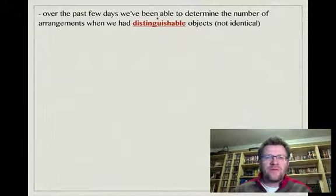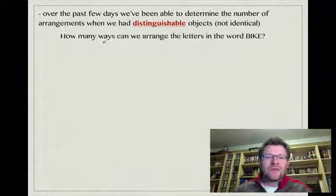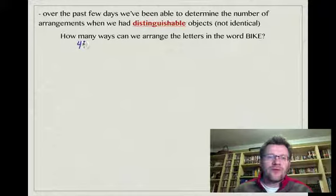Over the past few days we've been able to determine the number of arrangements when we had distinguishable objects, things that we could tell one apart from the other, which are non-identical. For example, how many ways can we arrange the letters in the word BIKE? Well, we learned that would be 4 factorial because there's four letters. That's the same thing as 4 times 3 times 2 times 1, which we know to be 24.